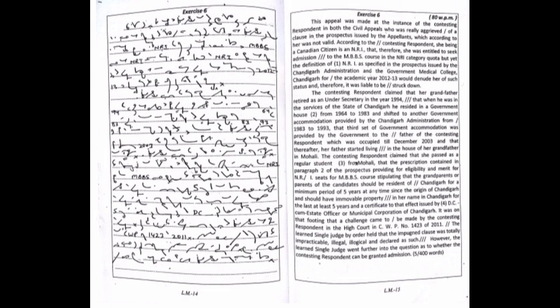...the grandparents or parents of the candidates should be resident of Chandigarh for a minimum period of five years at any time since the origin of Chandigarh and should have immovable property in her name in Chandigarh for the last at least five years, and a certificate to that effect issued by DC cum State Officer or Municipal Corporation of Chandigarh.